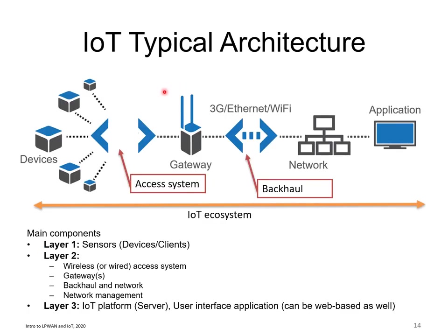The general architecture of a typical LoRaWAN system: you have the gateway, and the connection between the gateway and the devices is called the access system — in this case LoRaWAN. The gateway uses a backhaul connection — usually wireless, such as 4G, Ethernet, a cable, or Wi-Fi — to the internet. At the other end, you have a server that collects the data and presents it to the user.